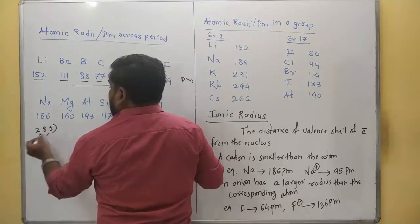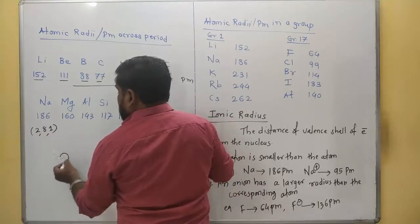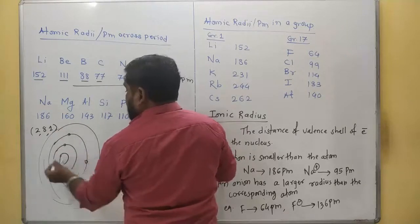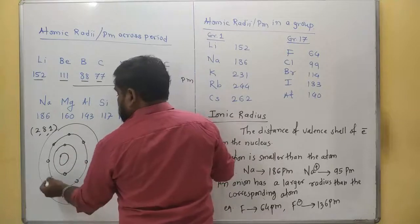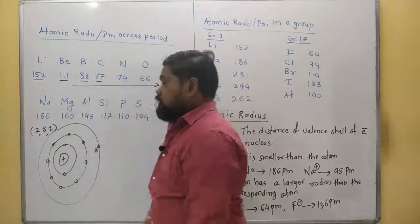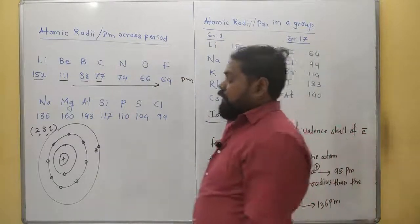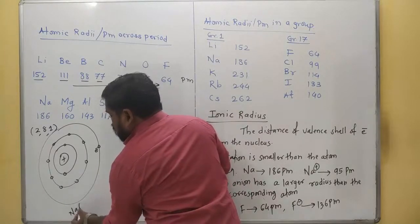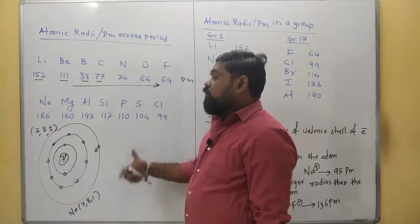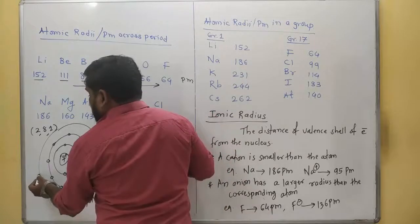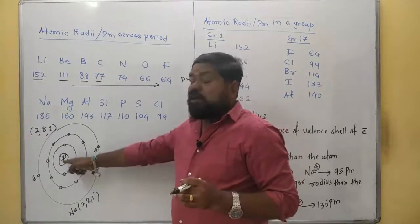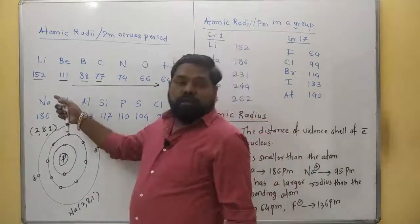Suppose we draw the atom with a nucleus, first shell, second shell, and third shell. The first shell contains 2 electrons, the second contains 8 electrons, the third contains 1 electron. The nucleus contains protons and neutrons, so the nucleus has a positive charge. In the case of sodium, the configuration is 2,8,1 with 11 protons. When we move to magnesium, the number of electrons will be equal to 2 shells and the protons will be 12, meaning nuclear charge will increase.